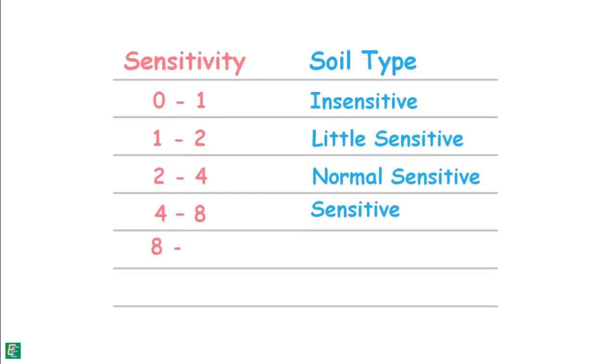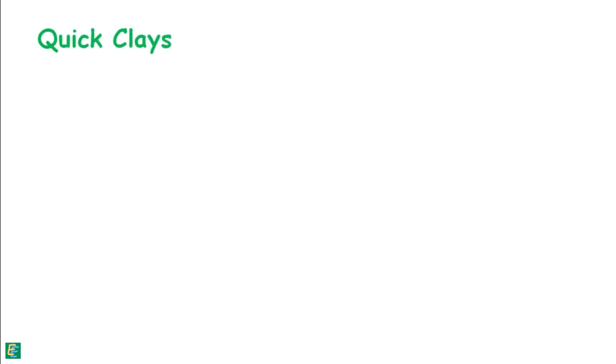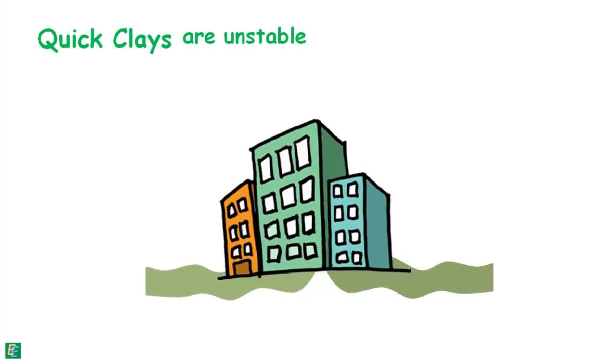Sensitivity between 8 and 16 are extra sensitive soils, and soils having sensitivity higher than 16 are called quick clays. They are unstable and collapse when overloaded.